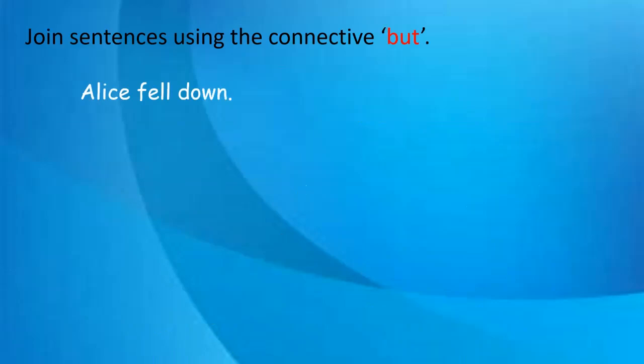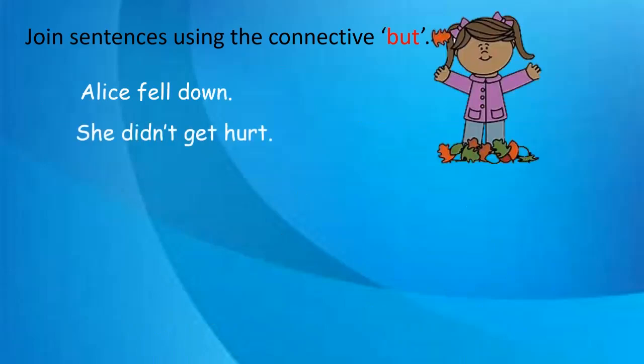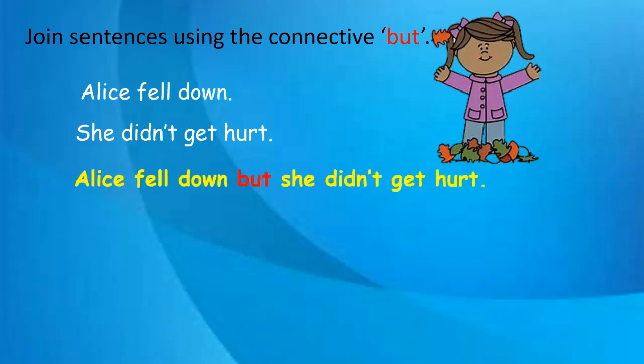Join sentences using the connective 'but'. 'Alice fell down.' 'She didn't get hurt.' When you fall down you are supposed to get hurt, but Alice didn't — that is the opposite of what was expected. So we write: 'Alice fell down but she didn't get hurt.' We write the first sentence as it is, then write 'but' in place of the full stop, then the second sentence.